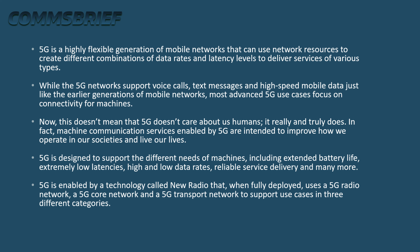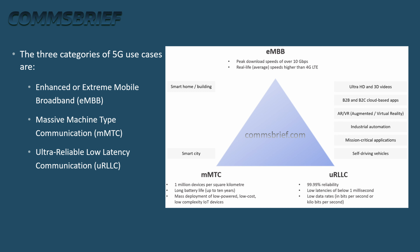While 5G networks support voice calls, text messages, and high-speed mobile data just like earlier generation mobile networks, most advanced 5G use cases focus on connectivity for machines. Machine communication services enabled by 5G are intended to improve how we operate in our societies and live our lives. 5G is designed to support different needs of machines, including extended battery life, extremely low latencies, high and low data rates, and reliable service delivery. The three categories of 5G use cases are: enhanced Mobile Broadband (eMBB), Massive Machine Type Communication (mMTC), and Ultra Reliable Low Latency Communication (URLLC).